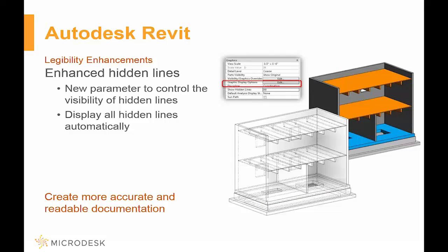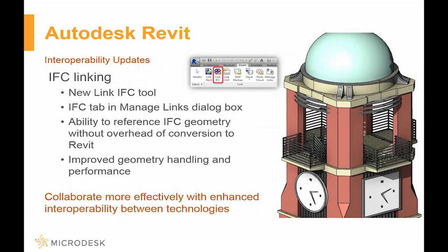Moving on to Revit. It's not necessarily a construction-specific feature, but the ability to do hidden lines in a view — showing everything that's hidden — is definitely useful. If you're trying to look into something or explain something, you can now see beyond objects without having to grab a bunch of things or do a lot of work. So if you're trying to see what's above the ceiling or behind a wall, it just makes it a lot faster.